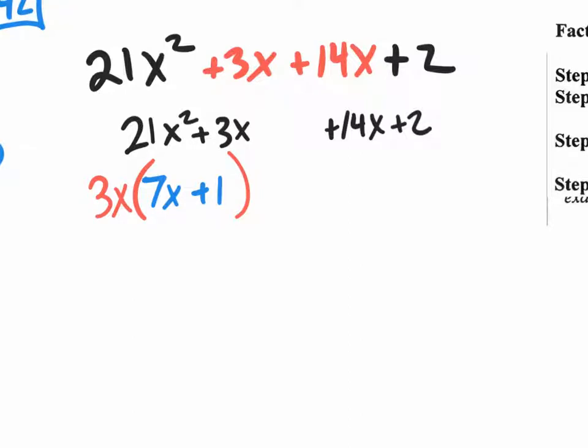And over here, what could I factor out of my second group? A 2. Pull out a 2 and you will have 7x plus 1 also left over.